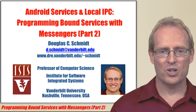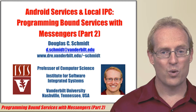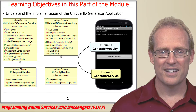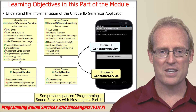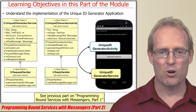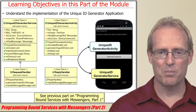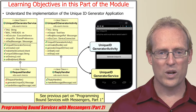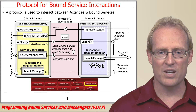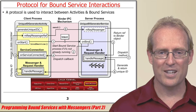Welcome to the next part of the module on Android Services and Local Interprocess Communication Mechanisms, which continues our analysis of how to program a bound service. The previous video summarized the overall design and the individual steps involved in programming bound services in general, and the unique ID generator service in particular. We now take a closer look at the protocol used to communicate between activities and services, using the unique ID generator application as a running example.